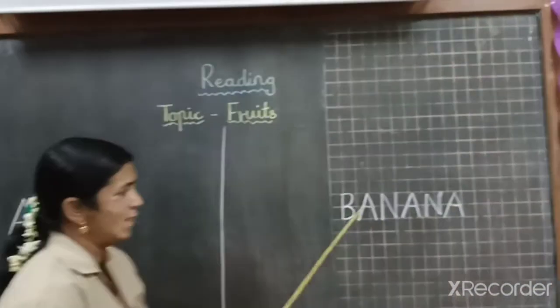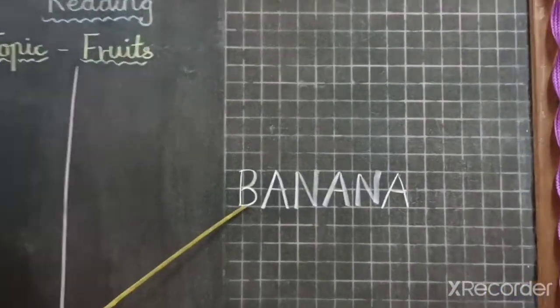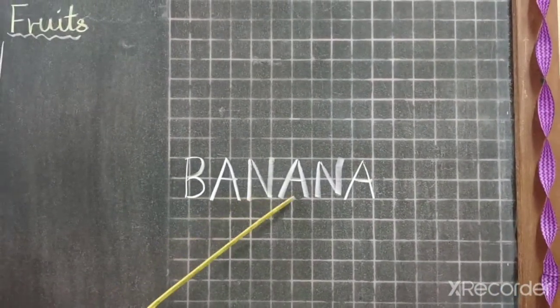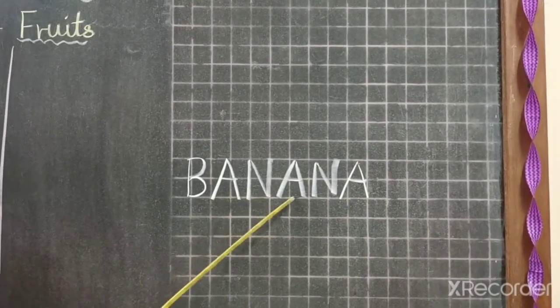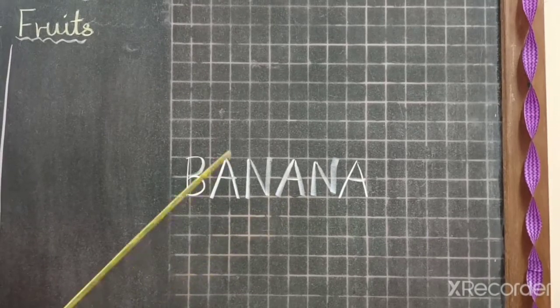Now we will see what is the spelling of banana. Look here. B-A-N-A-N-A, banana. So here one A then I get N, A-N, so it is confusing little. So pay attention. B-A-N-A-N-A, banana.